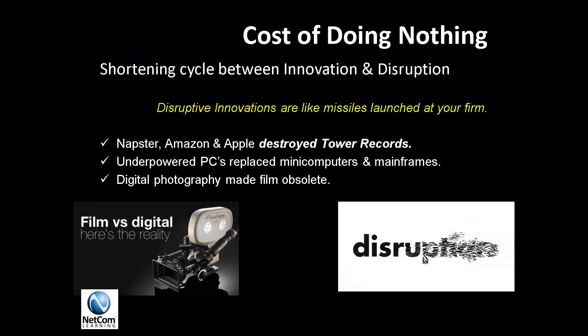Now let's talk about the cost of doing nothing. We now see a shortening cycle between innovation and disruption. If we look at Napster, Amazon, and Apple with their ecosystem of iTunes, they completely destroyed the retail music industry. Underpowered personal computers have replaced mini computers and mainframes from the 1960s and 70s. And digital photography has made film obsolete.